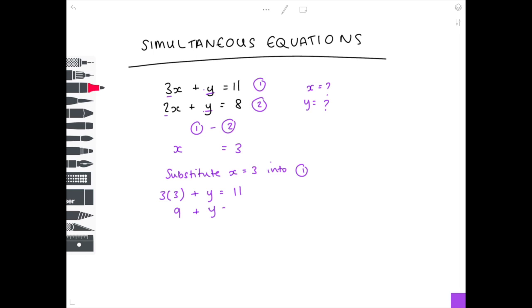Then we need to isolate y, get it by itself. We do that by taking away 9 from both sides because 9 take away 9 is obviously 0, so we just have y on the left hand side.